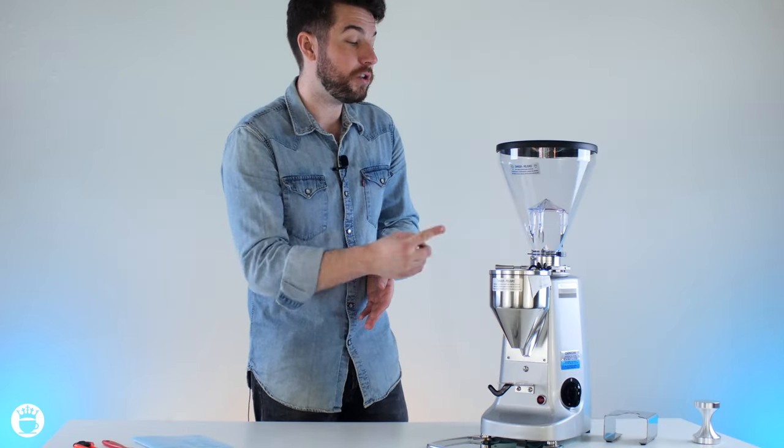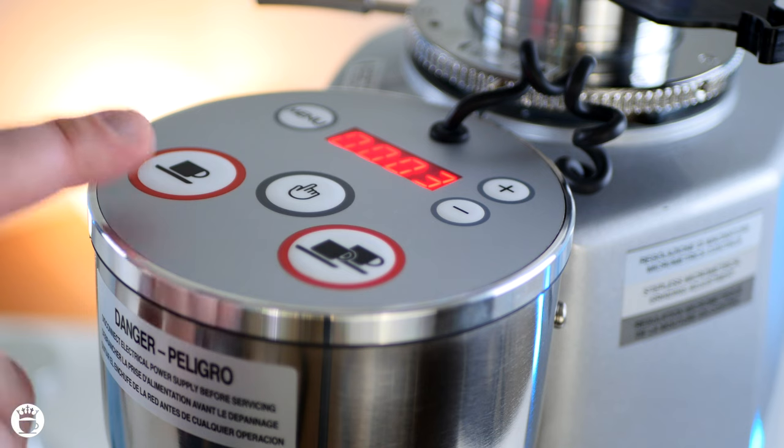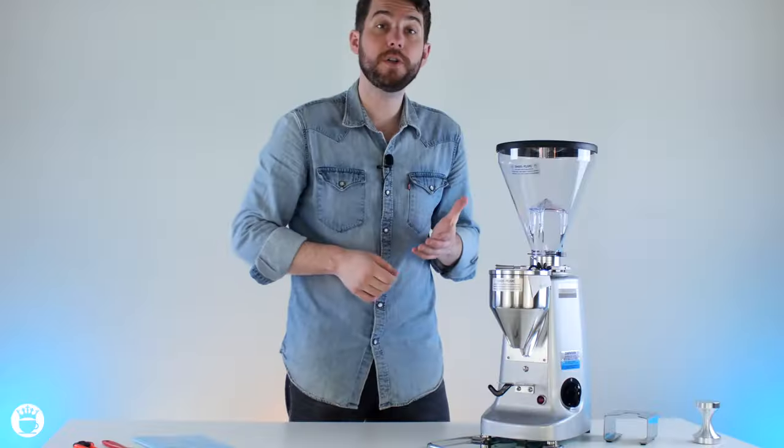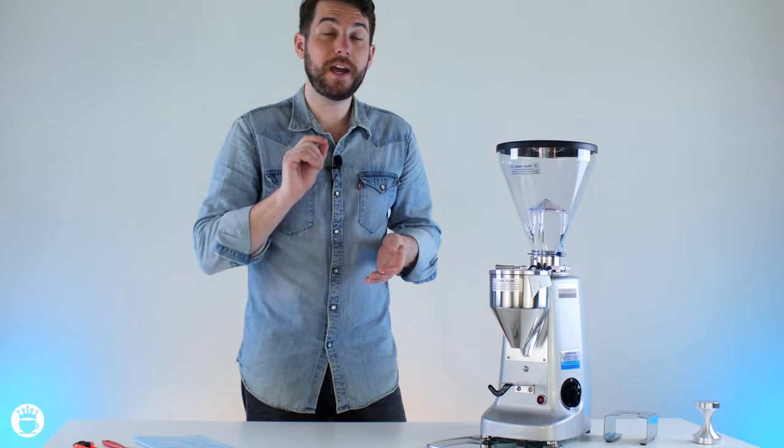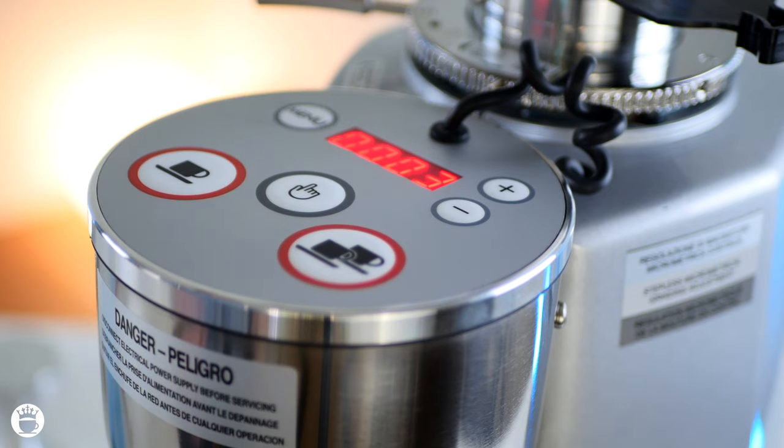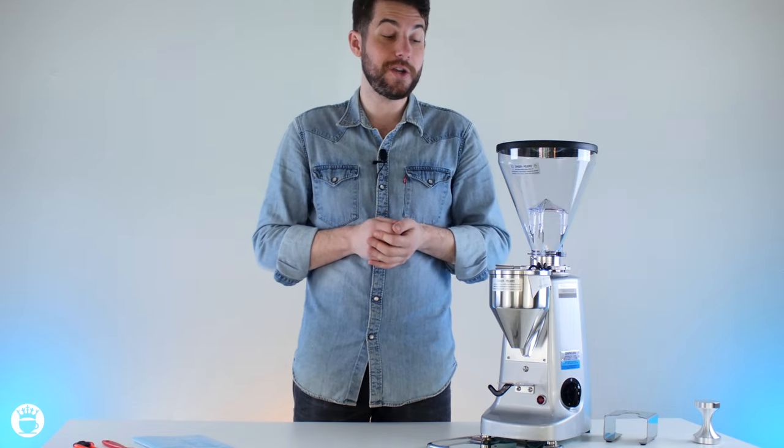Up top here on the control panel, you have a single, double dose button, a continuous dosing button that you can also use as a purge feature, or just to add a little bit extra espresso if you don't quite meet your weight requirements. There is a menu button for programming, and there's also a plus and minus for adjusting your doses and navigating through the menu.